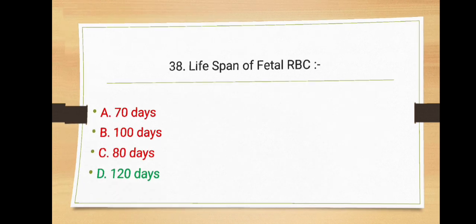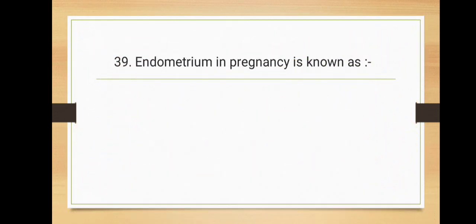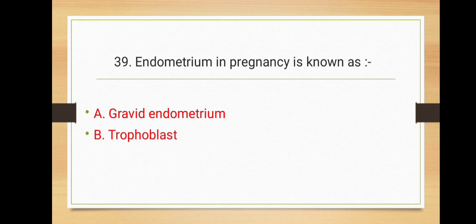Further moving to 39th question: endometrium in pregnancy is known as - option A gravid endometrium, option B trophoblast, option C deciduous